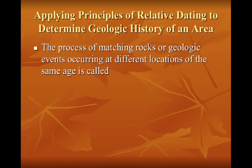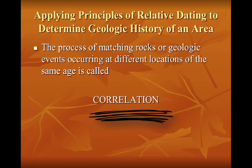We apply the principles of relative dating to determine the geologic history of an area. Our principles of relative dating include those three laws that govern relative dating: the law of superposition, the law of original horizontality, and the law of cross-cutting relationships. This allows us to determine the entire geologic history. We can match rocks or geologic events that occur at different locations all over the world at the same age. This is going to be called correlation — we're correlating the layers or matching them up based on their properties.